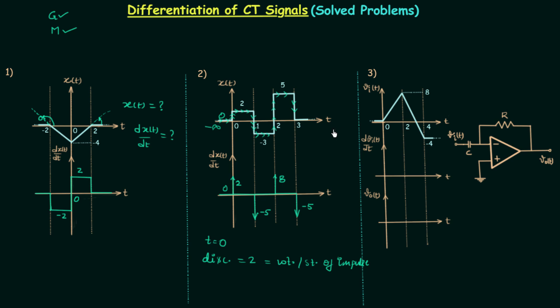From three to infinity the signal is equal to zero, which is a constant, so the slope is going to be zero. This is the final waveform of the first derivative of signal x(t), obtained by following the graphical method. You can also obtain these results by following the mathematical method, as I explained in the previous lecture.